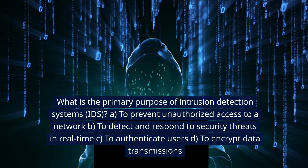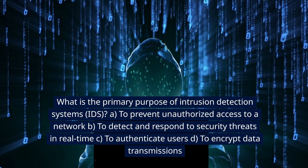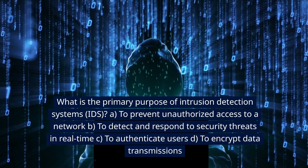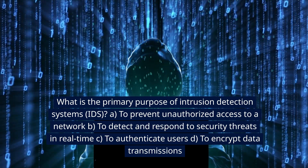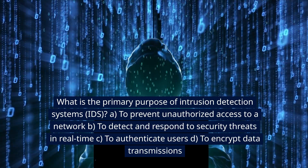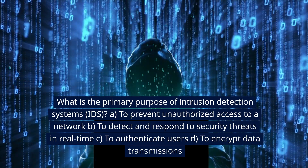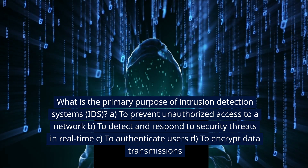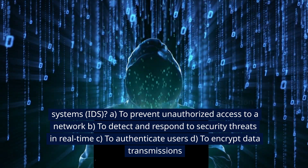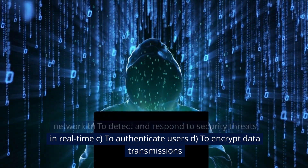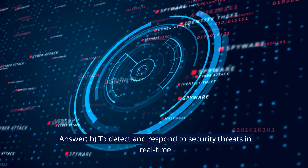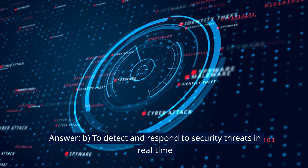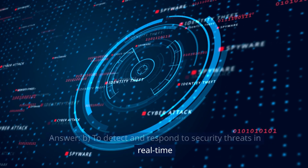What is the primary purpose of intrusion detection systems (IDS)? A. To prevent unauthorized access to a network. B. To detect and respond to security threats in real time. C. To authenticate users. D. To encrypt data transmissions. Answer: B. To detect and respond to security threats in real time.